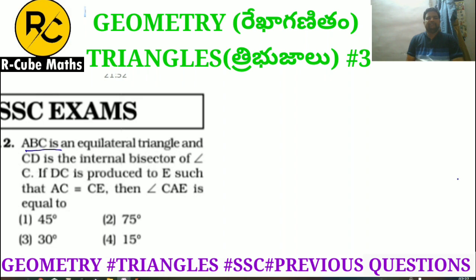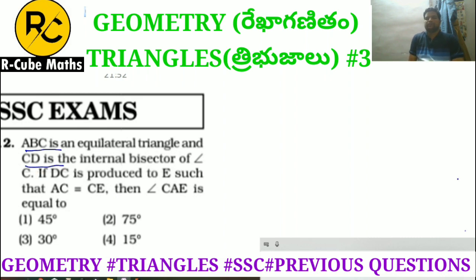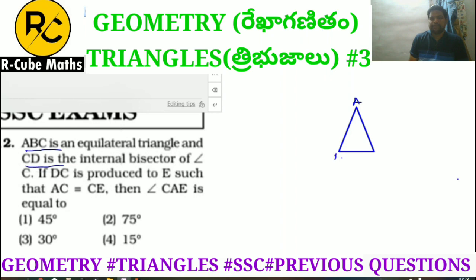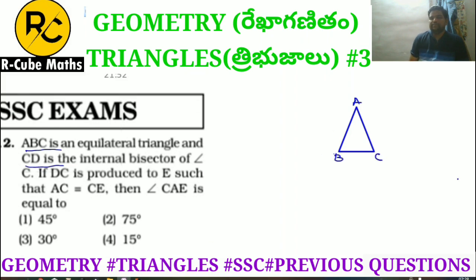Question 1: ABC is an equilateral triangle and CDE is the internal bisector of angle C. If DC is produced to E such that AC is equal to CE, then angle CAE is equal to? Given information: ABC is an equilateral triangle, and CDE is an internal bisector of angle C.